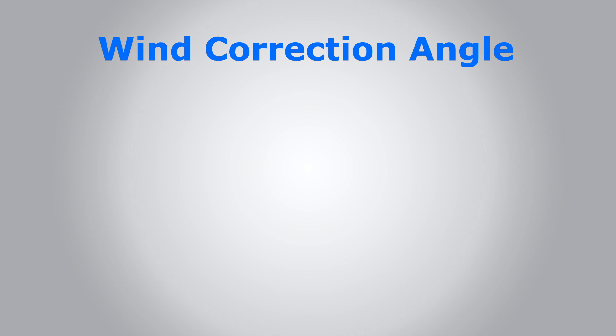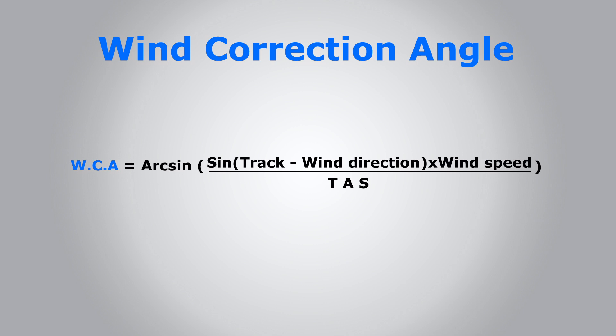In order for us to find the heading, we need to calculate the wind correction angle, apply that to the track, and then we're going to find our heading. So this is the formula right here: the wind correction angle equals the arcsin, which is just the inverse sine - you can access it on the calculator by just pressing shift and sine - of the track minus the wind direction times the wind speed over the true airspeed.